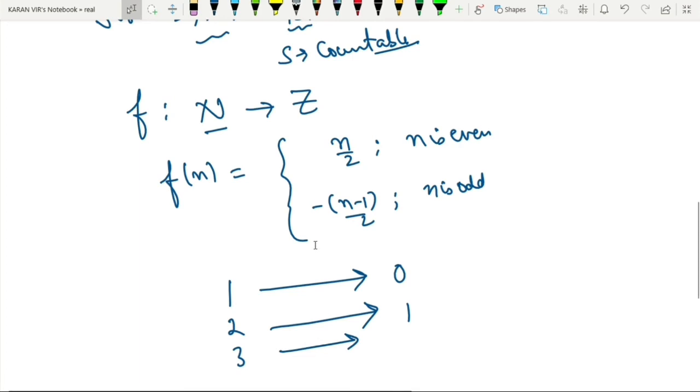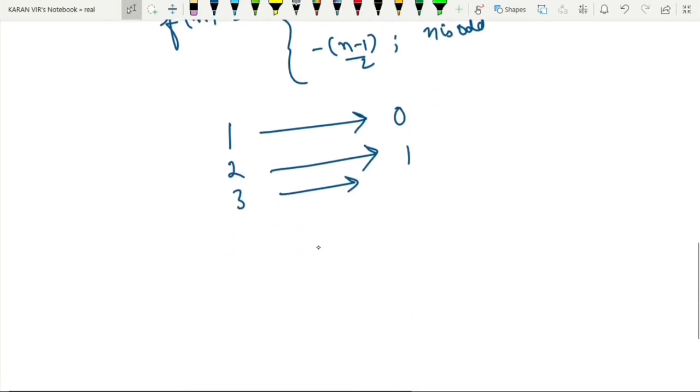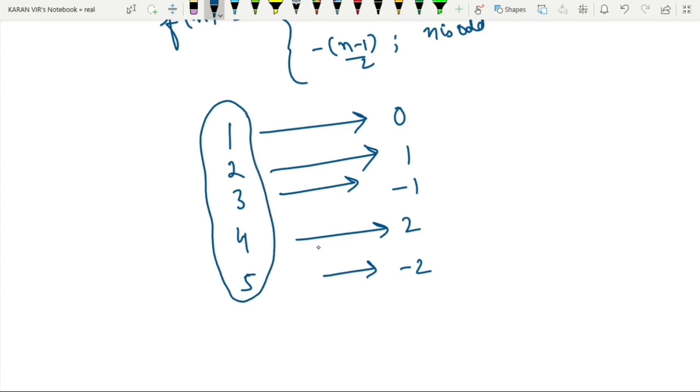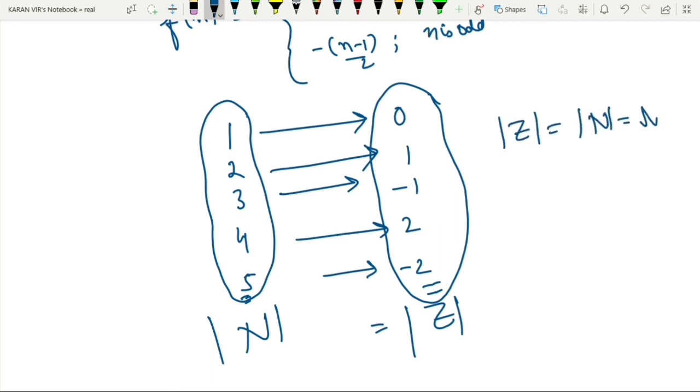Divide by 2 and minus sign, so minus 1. Similarly, we will get 4 mapped to 2, 5 to minus 2, and so on. So the cardinality of integers is equal to the cardinality of naturals, which is aleph naught. And hence integers are countable.